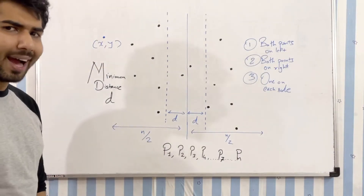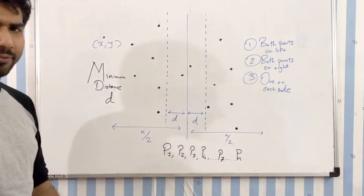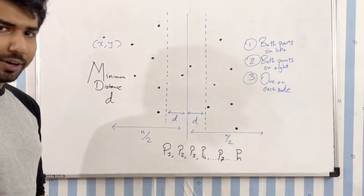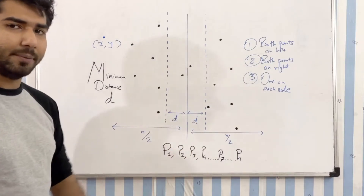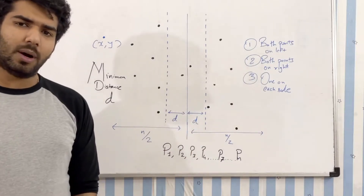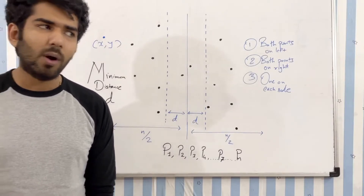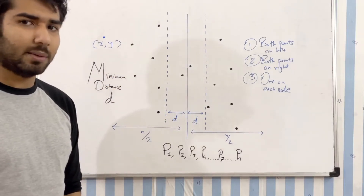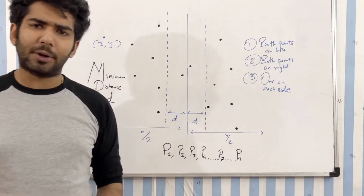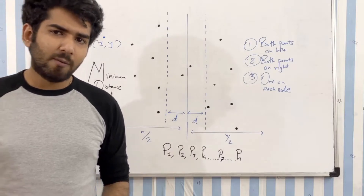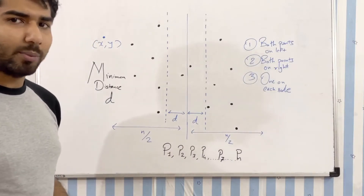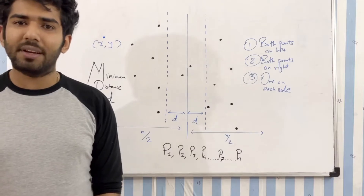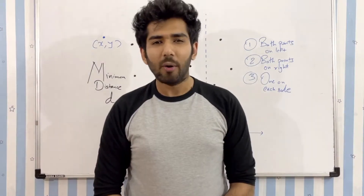If the distance comes out to be less than d, we return that; otherwise we return d itself. To summarize: we recursively divided all the points and computed the minimum distance from the left and right sides — time complexity for that is O(n log n) due to the recursion. We then restricted points to the strip, sorted them, and computed the minimum distance. The sorting step is again O(n log n), so the total time complexity is O(n log n).